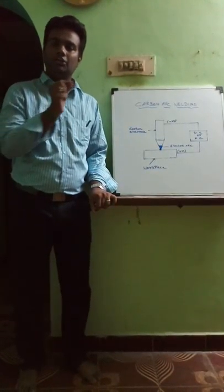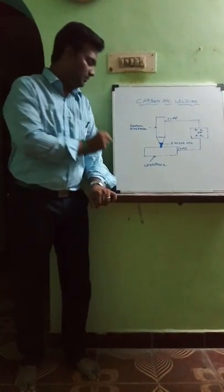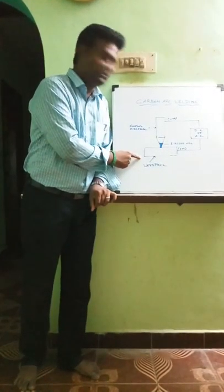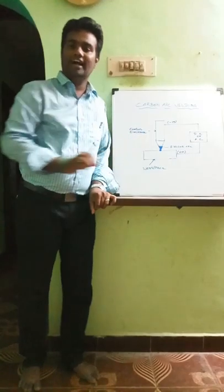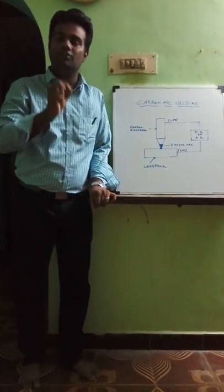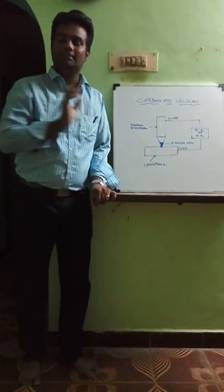The following is the equipment for carbon arc welding: this is the workpiece, this is the DC or AC power supply, and this is the non-consumable electrode made of carbon. Now for the working methodology.